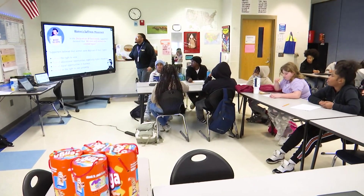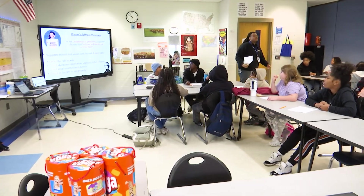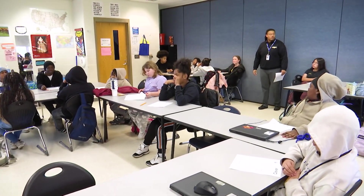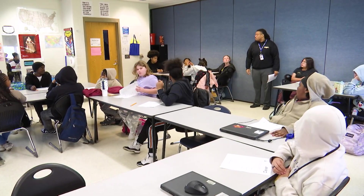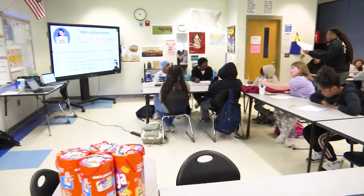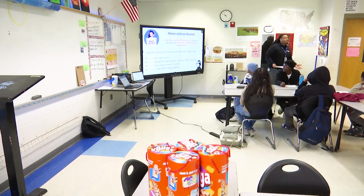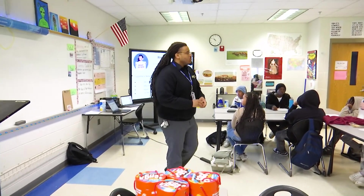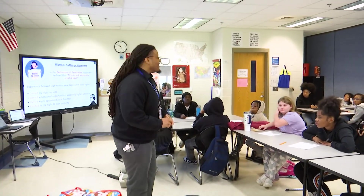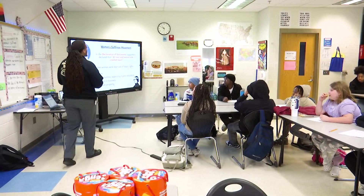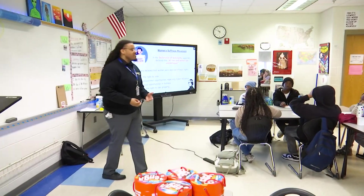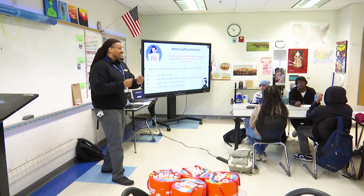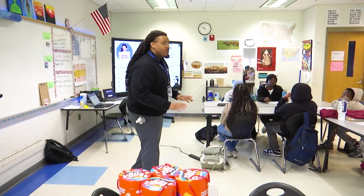Let's look at women's suffrage. The women's suffrage movement is going to start with something called the Declaration of Sentiments — that is their guiding document. They're going to declare that all men and women are created equal. Supporters believe that women were being deprived of basic rights, such as being denied the right to vote. You all know women could not vote until 1920, until the 19th Amendment. Women were also denied education opportunities, especially higher education, denied equal opportunities in business, and limited in their right to own property.